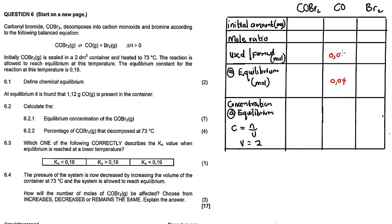The initial amount of products is zero — we are not given any value. The mole ratio is 1:1:1 according to the balanced equation. In the 'used or formed' row, we apply stoichiometry to find unknown values. Since the mole ratio is 1:1:1, the moles formed for each species equal 0.04. So bromine also has 0.04 moles formed, and for carbonyl bromide the value decomposed is also 0.04.